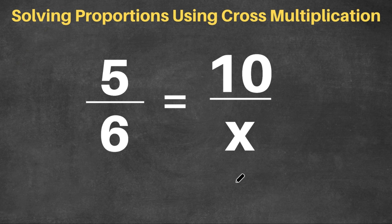So right here, we have the problem of 5 over 6 equals 10 over x. And we want to find the value of x. So to do that, we're going to cross multiply 5 and x. So we're going to do 5 times x. And we're also going to do 6 times 10.